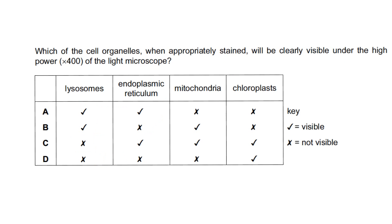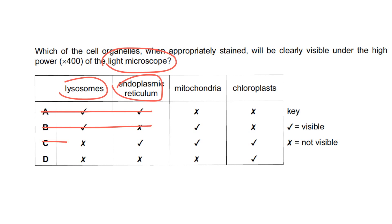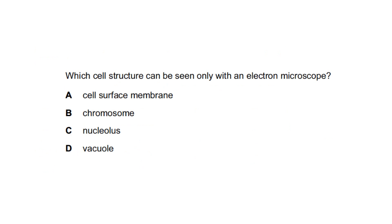Question: which organelle, when appropriately stained, will be clearly visible under high-power light microscope? Using elimination: lysosomes and the endoplasmic reticulum cannot be seen with the light microscope, only the electron microscope. Eliminating options A, B, and C based on these inclusions, the answer is D — which includes mitochondria and chloroplasts.